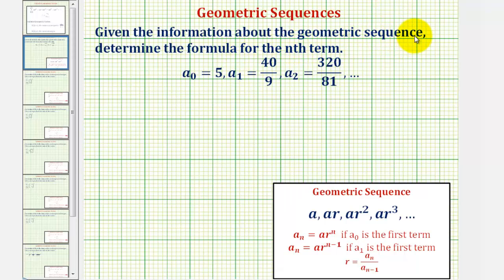Given the information about the geometric sequence, we're going to determine the formula for the nth term. So we're given a sub zero equals five, which means the first term in the geometric sequence is five when n is zero.